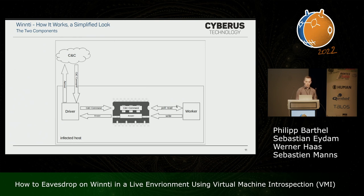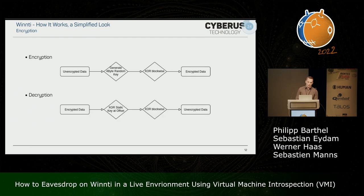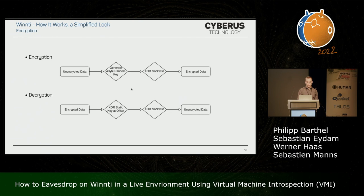Everything in that memory region is always encrypted, so let's look at WinTi's encryption. For encryption, WinTi generates a 4-byte random key and XORs it block-wise over the message. For decryption, the receiving partner can't know the random key, so WinTi uses a static key at a specific offset — both partners know where it is. The receiver XORs the static key over that offset to calculate the random key, then uses the random key to decrypt the message.